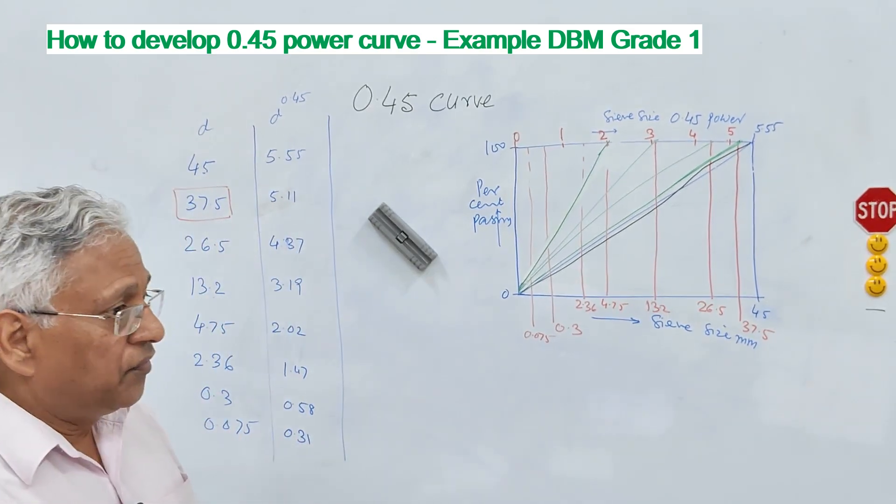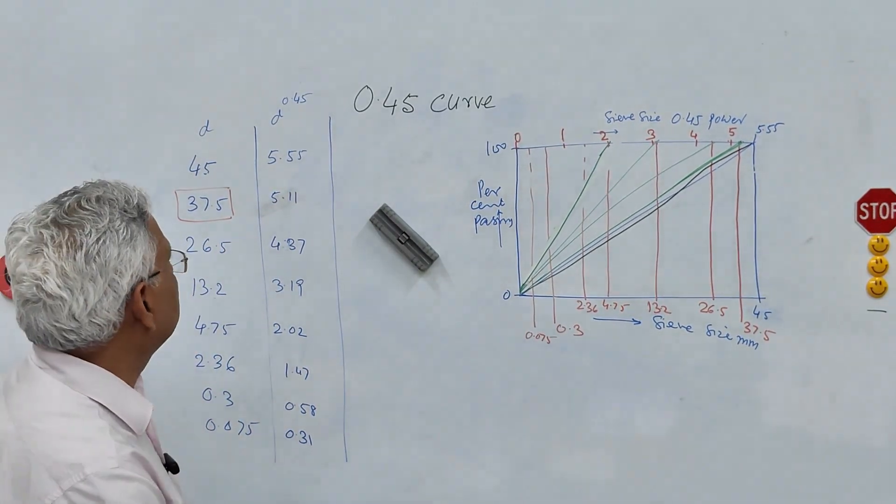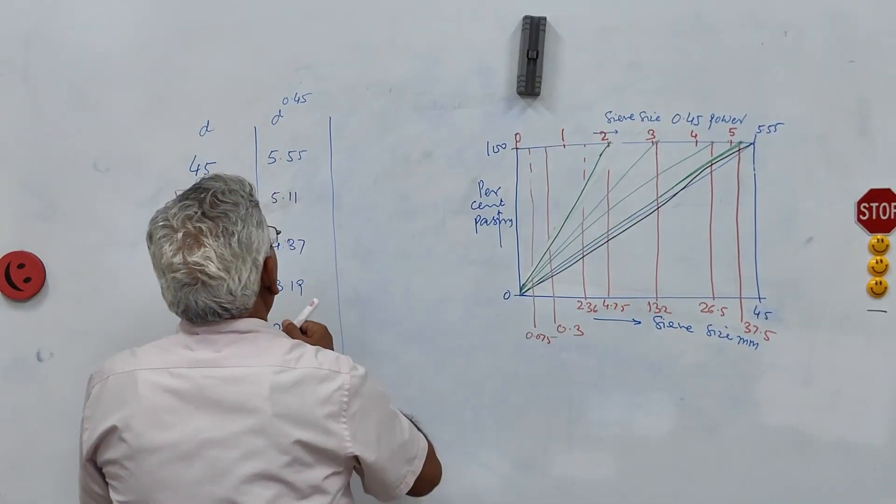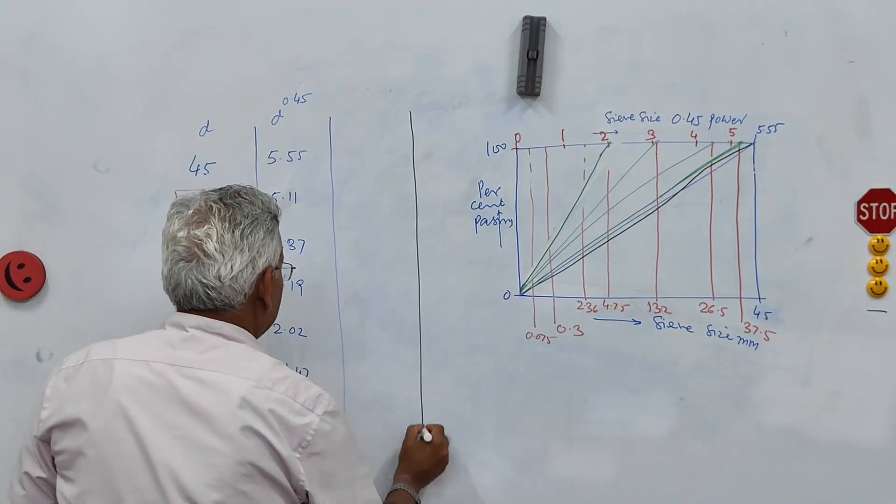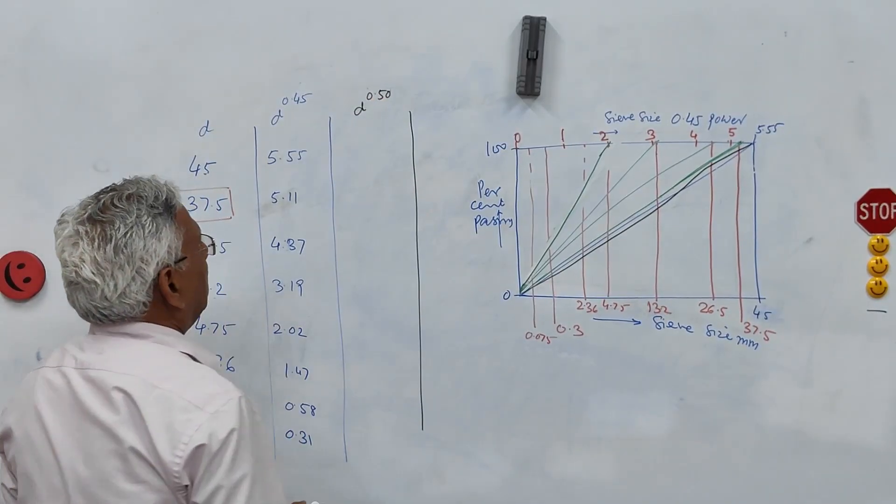Now what is the difference between this 0.45 curve and 0.5 curve? If you take let us say another column here, you make another column here and you find out what is d raised to the power 0.5.